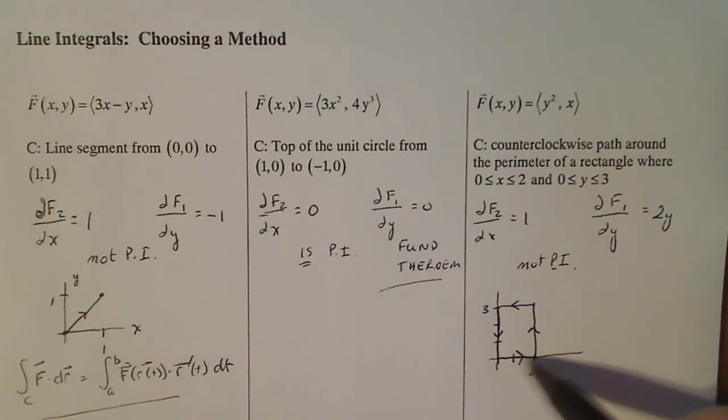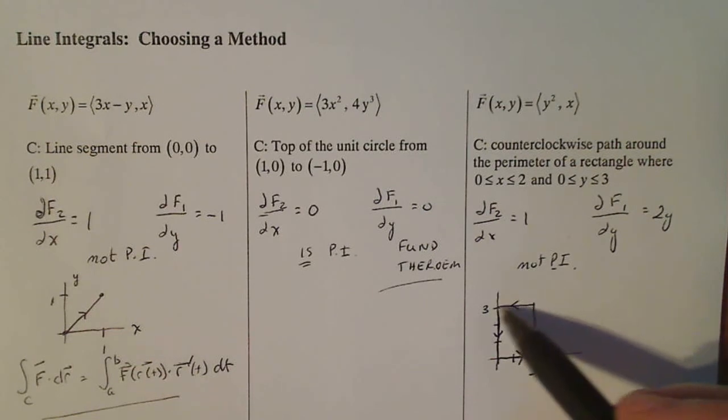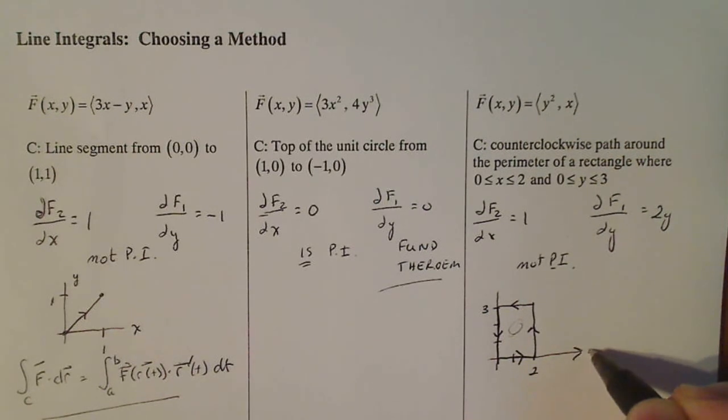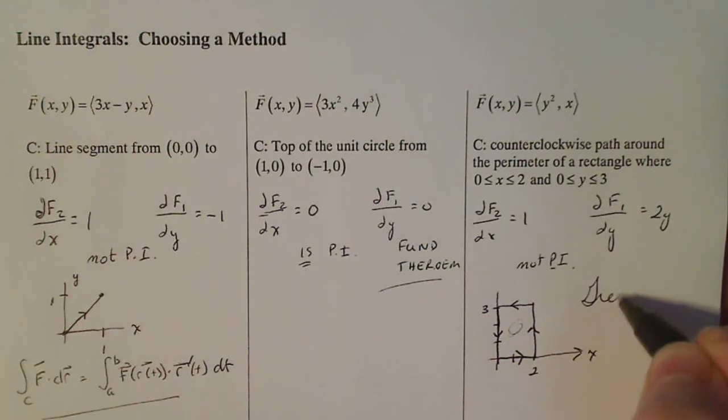And so you can see that I have a simple piecewise smooth closed curve. And as I walk in this direction, if you imagine yourself literally walking along these lines in that direction, the interior here would be to your left. And that's what Green's theorem says. So here I'm going to use Green's theorem.